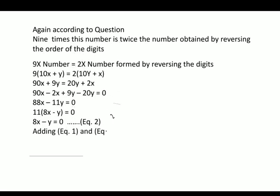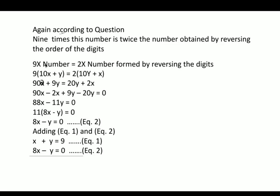Now adding equations 1 and 2, because in both equations the coefficient of y is the same but the signs are opposite: plus y and minus y cancel out. Equation 1: x plus y equals 9. Equation 2: 8x minus y equals 0. Adding gives 9x equals 9, so x equals 9 upon 9, that is x equals 1.